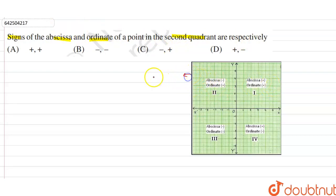This is the Cartesian plane, in which this is x-axis, this is x-axis, this is y-axis and this is y-axis. Basically there are two axes but it is divided into four parts.